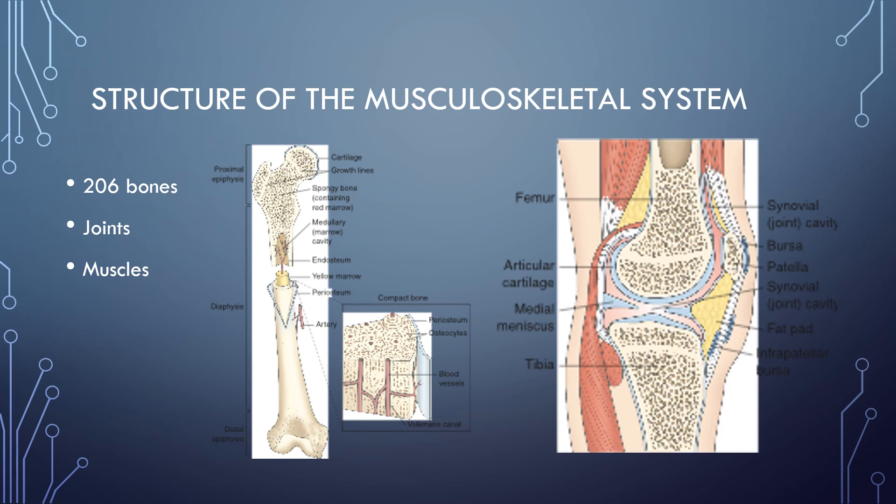Joints have their own structure, including ligaments, tendons, cartilage, fat, and fluid. Our joints can move up to 15 different ways. This includes flexion and extension, rotation, pronation and supination, and inversion and eversion.